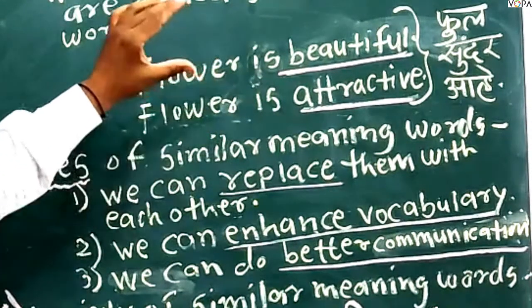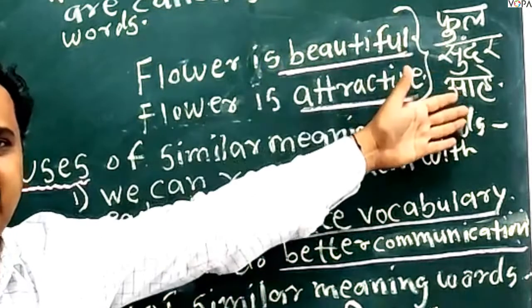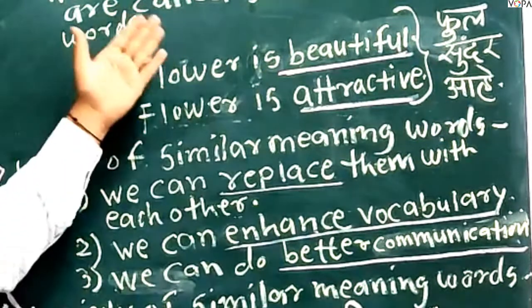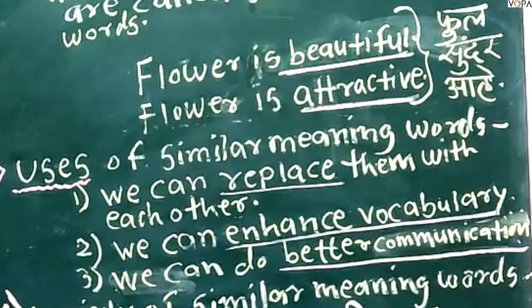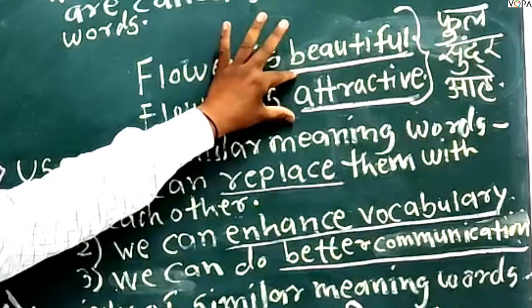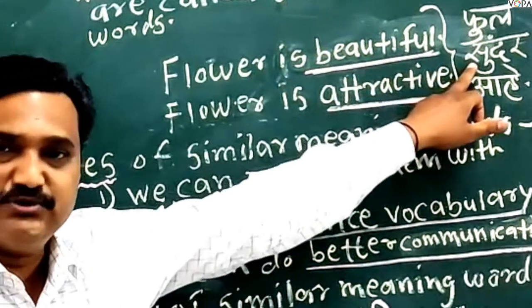Both these sentences mean the same - 'phool sundar ahe'. Because in these two sentences there are two similar meaning words, and those are beautiful and attractive. Both mean sundar.